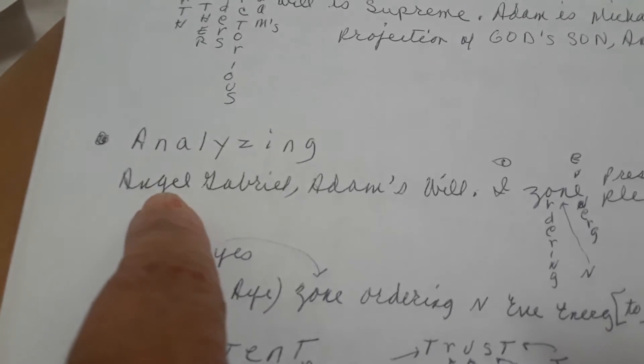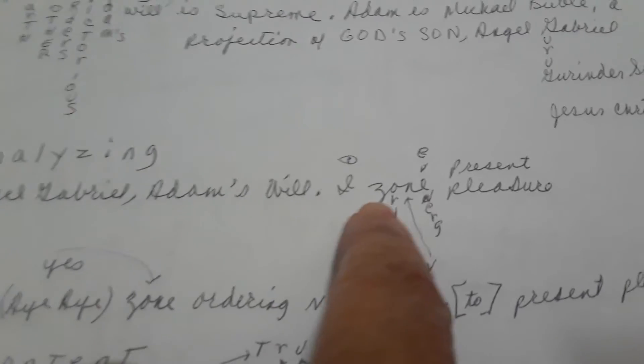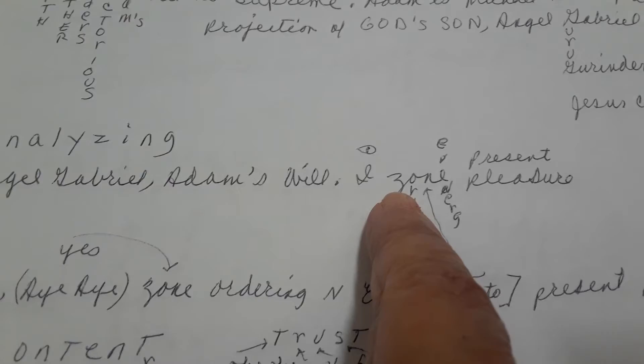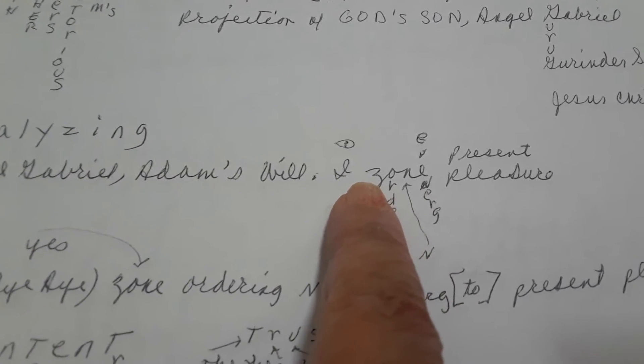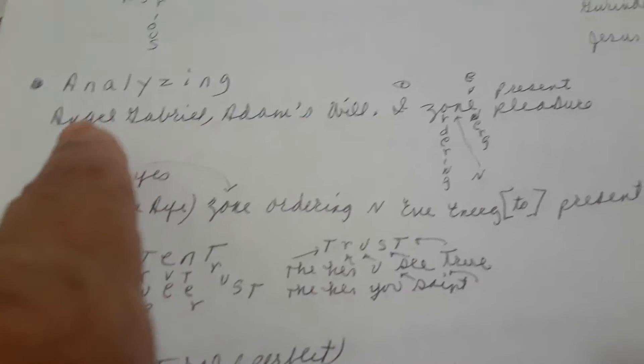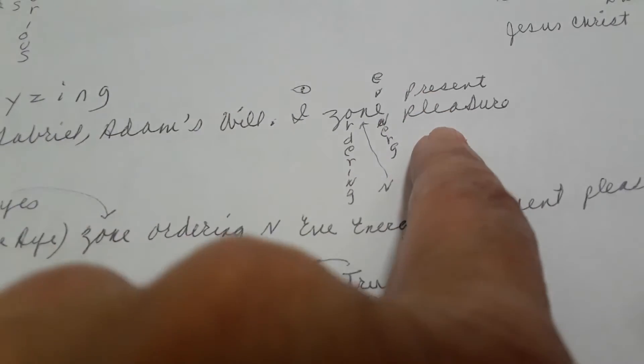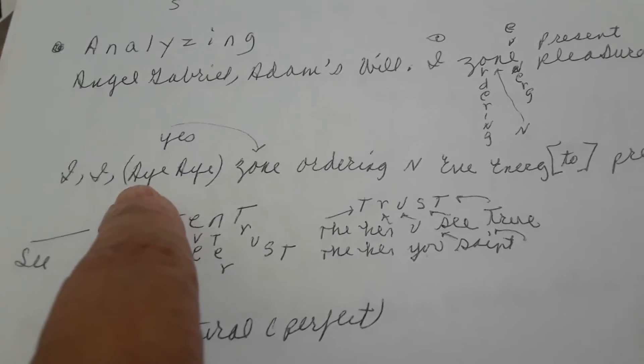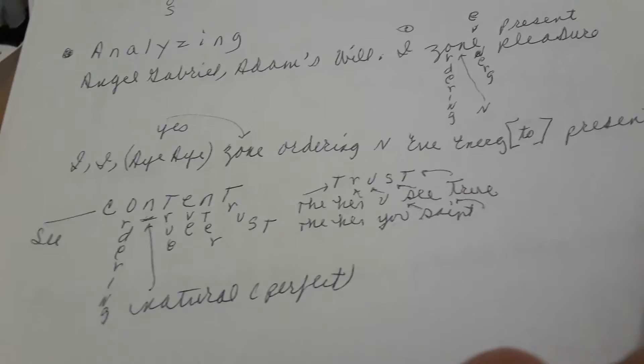Analyzing. A-N for Angel Gabriel, A for Adams, L for will, I, Z for zone, Y for I. Angel Gabriel, Adam's will, I zone ordering. One, one, one, Eve energy presents pleasure. I spell A-Y-E, which means yes, is a zone ordering in Eve energy to present pleasure. It's just a clear way of saying that.